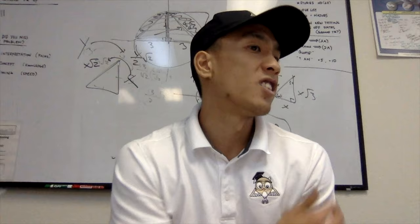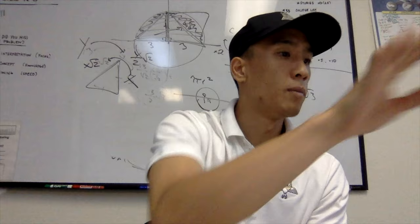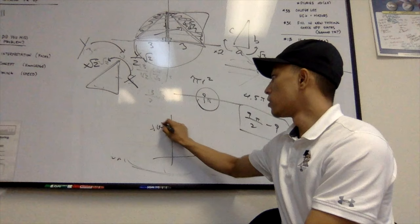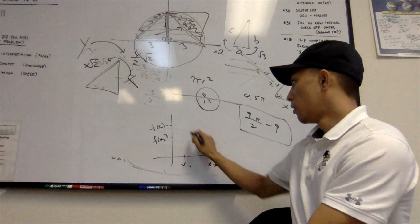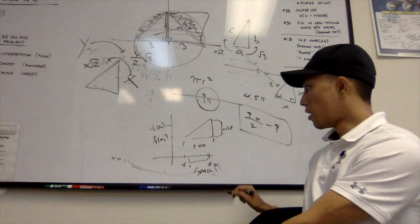A derivative is an instant slope, meaning that the run is as small as possible. If I were to say rise is f(x) of 2 minus f(x) of 1, because what you have is you have the second one and you have the first one. That minus that is your rise. That minus that is your run. But you want to make this as small as possible.